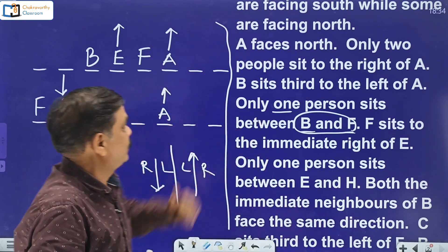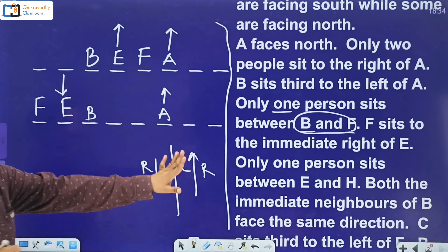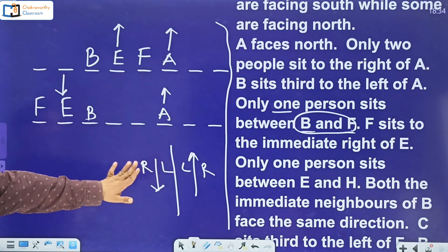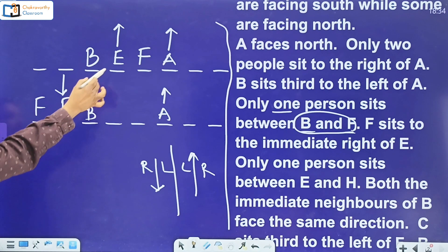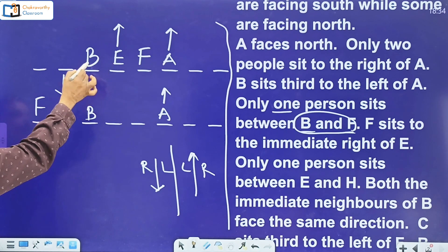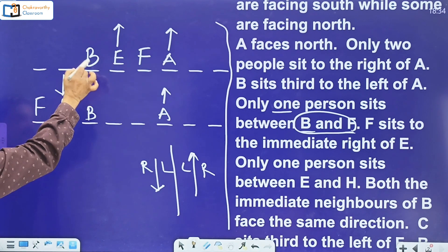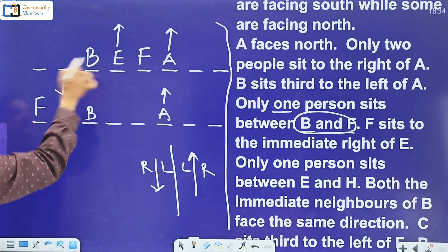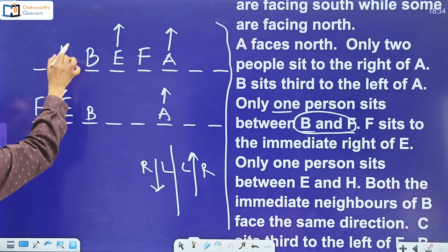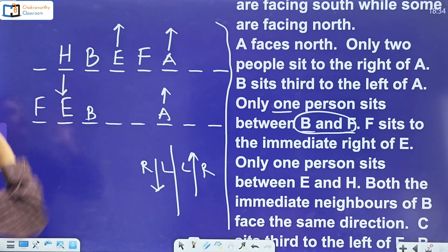Next clue: only one person sits between E and H. This is direct information. Between E and H there is only one person — and that one person must be B. So H has only one valid place on the chart.